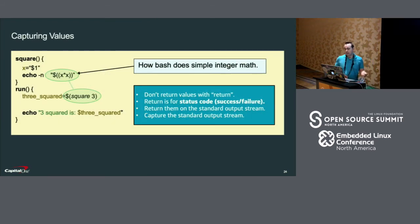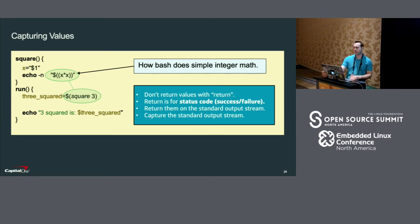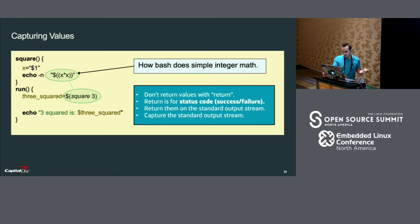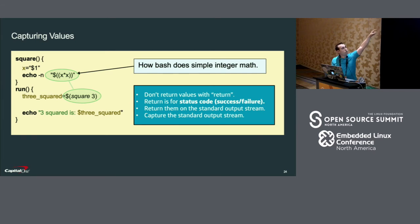Bash has a return statement, which is easily confused as being meant to return a value — that is not right. The purpose of the return statement is to state the status of the function, meaning it succeeded or it failed, and the number has to be between zero and 255. Zero means it succeeded and anything else means it failed. So if you want to return data from a function, I recommend following this pattern: you print the output to standard out of that 'square' function, and then the calling 'run' function captures that standard output. This is how we pass values between them.